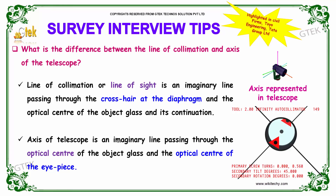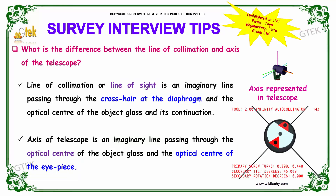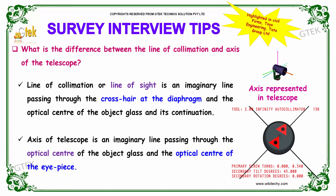So the axis of telescope is an imaginary line, whereas the line of collimation is a line of sight — an imaginary line passing through the crosshair at the diaphragm and the optical center of the eyepiece. That makes the major difference between the line of collimation and the axis of telescope.